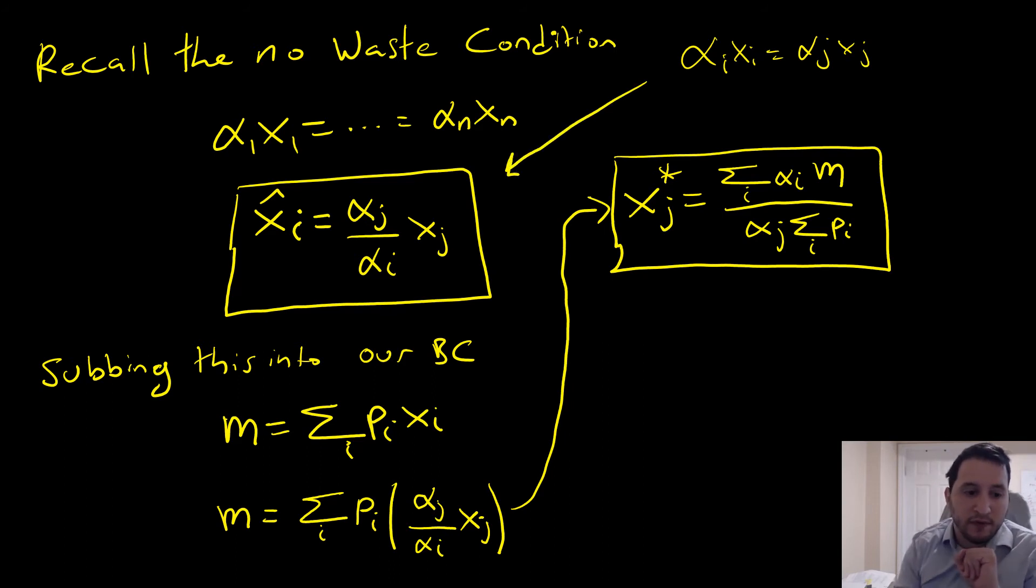From there, we take this intermediate bundle, which we just solved for directly, and substitute it into our budget constraint. From our budget constraint, we're able to get our Marshallian demand structure.